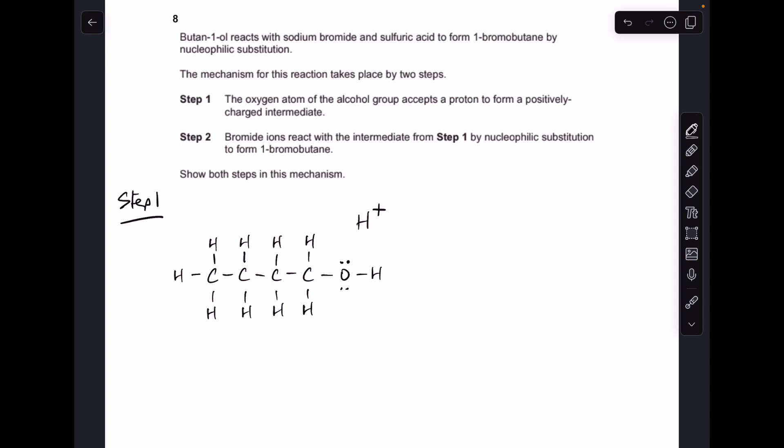I'm going to use one of them and donate to the H plus ion. We'll show that with that curly arrow. And what that's going to do is it's going to bond the oxygen to the H plus ion. So the positively charged intermediate looks like that.